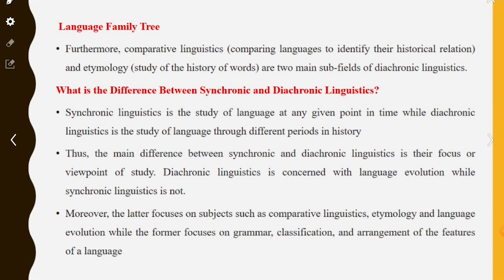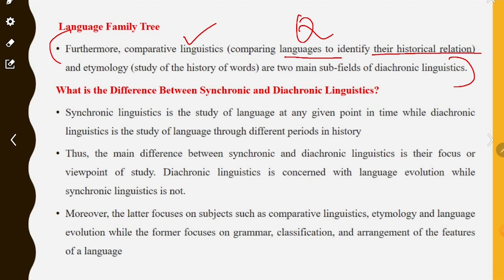The two main sub-fields of diachronic linguistics are comparative linguistics — comparing languages to identify their historical relation — and etymology.